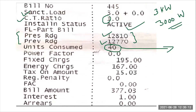The power factor is equal to 1. For a domestic consumer, we consider the power factor to be unity. Unlike industrial consumers where power factor is carefully monitored, here it is taken as 1. The fixed charge is 195 rupees. This is a fixed amount you are liable to pay even if you have not consumed any energy.